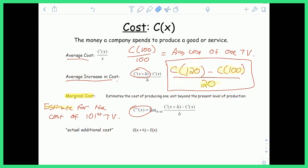So the derivative of the cost function, which we know to be the limit as h approaches 0 of C of x plus h minus C of x over h, this gives you an approximation for the cost of that 101st TV. So let's be clear, C prime of x, or let's say C prime of 100, C prime of 100 is giving you the cost of the 101st TV.